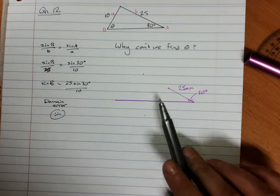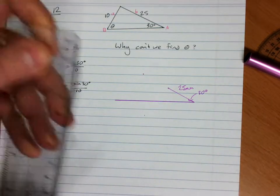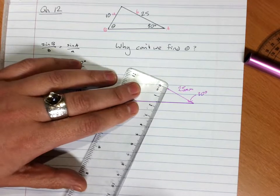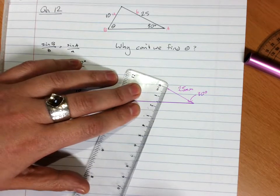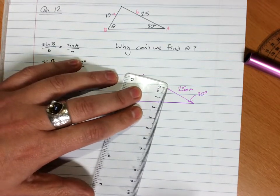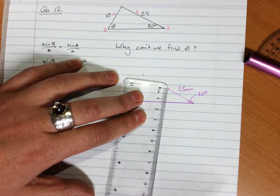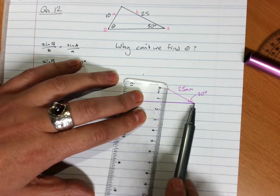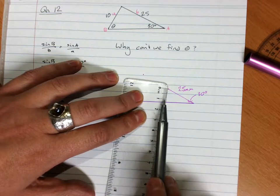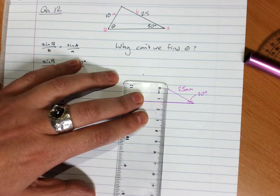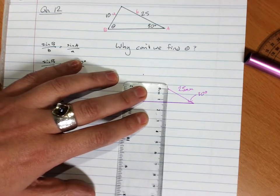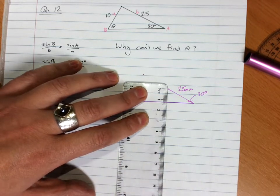And now we need this side to be 10 millimeters, and what you'll see is that no matter where I put that side, I can't get a triangle closed with a 30 degree angle, 25 millimeters. I need more than 10 millimeters here. From the looks of it, I need a minimum of 12.5-ish.